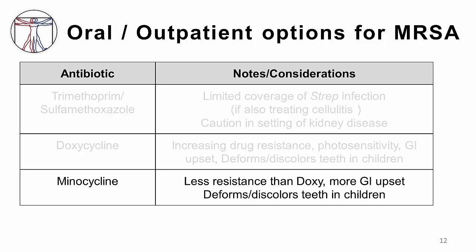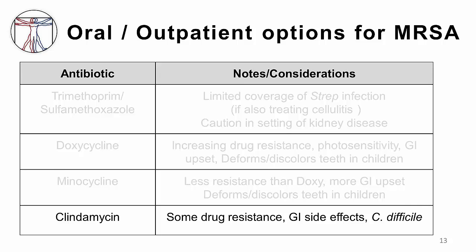Minocycline is in the same family as doxycycline, but MRSA tends to have less resistance to it because it is an agent that is not used as commonly as doxycycline. Unfortunately, one reason that it is used less commonly is that it tends to have more GI side effects than doxycycline. It should similarly be avoided in children because of the teeth effects. Clindamycin is the only drug listed here that can reliably cover both strep and staph species. Unfortunately, in some areas of the country, MRSA resistance to clindamycin has reached over 50%. Clindamycin has also been tied to some unpleasant GI side effects. It is classically associated with causing Clostridium difficile diarrhea, although this connection is not quite as strong as it used to be. As antibiotics like ceftriaxone and the fluoroquinolones have come into more common use, they are now the leading cause of C. diff infection.